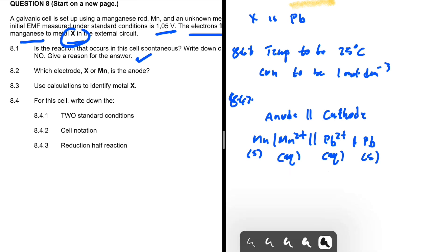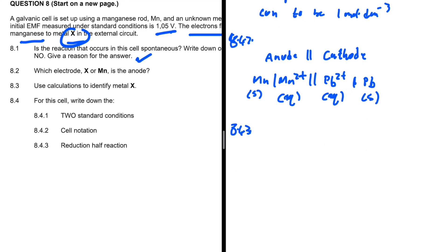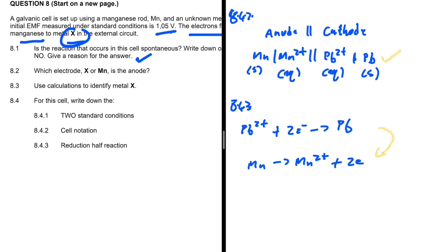For question 8.4.3, the reduction half-reaction occurs at the cathode where electrons are gained: Pb²⁺ + 2e⁻ → Pb. The oxidation half-reaction is: Mn → Mn²⁺ + 2e⁻. Combining these gives the overall cell reaction: Mn + Pb²⁺ → Mn²⁺ + Pb.